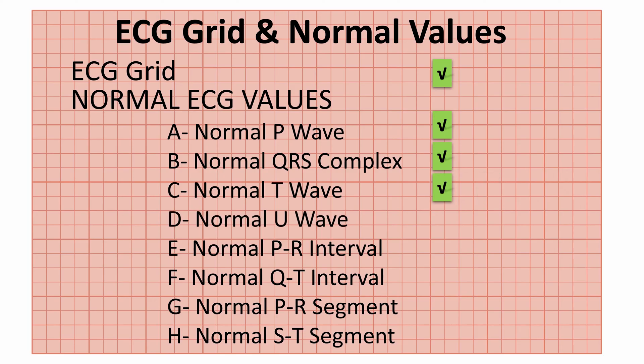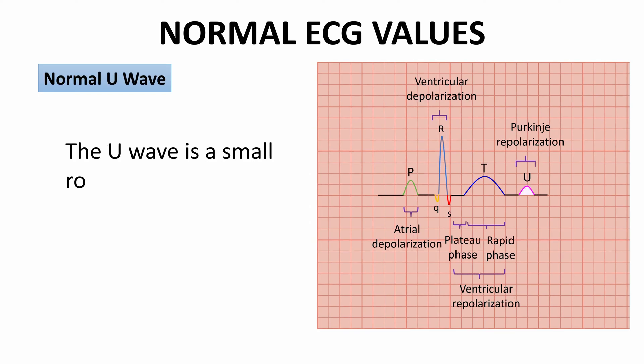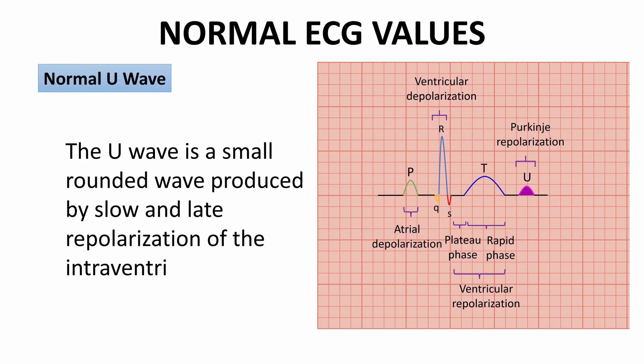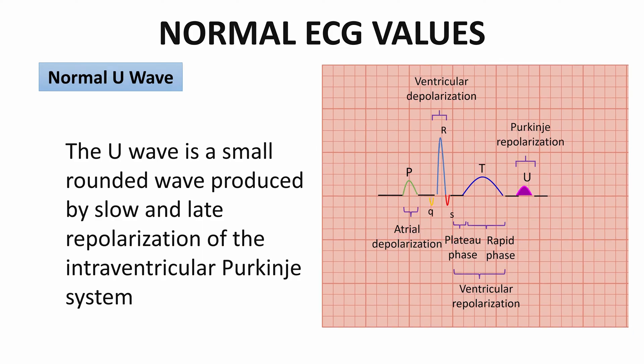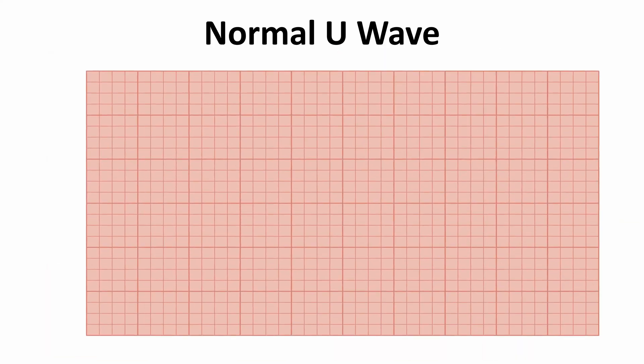The U wave is a small, rounded wave produced by slow and late repolarization of the intraventricular Purkinje system after the main ventricular mass has been repolarized. It is often difficult to notice the U wave, but when seen, it is best appreciated in the precordial leads V2 to V4.